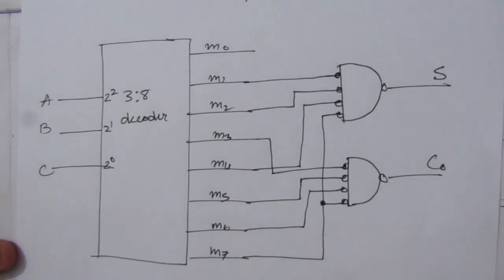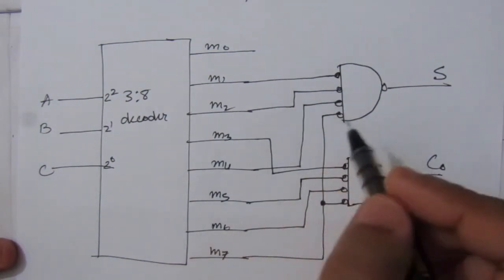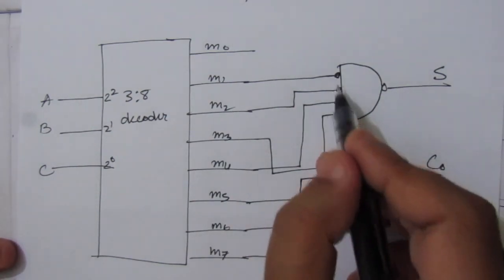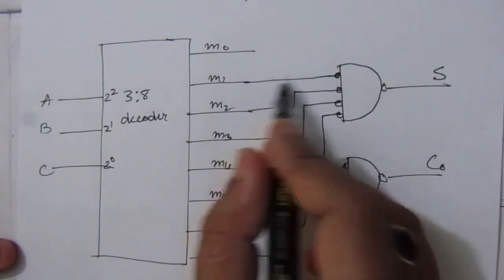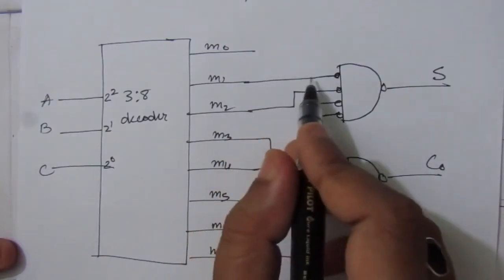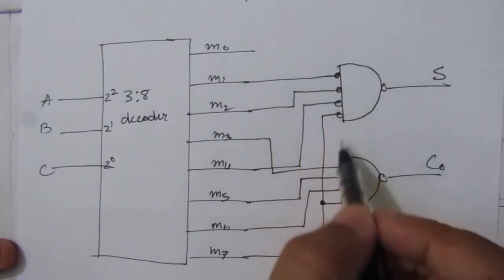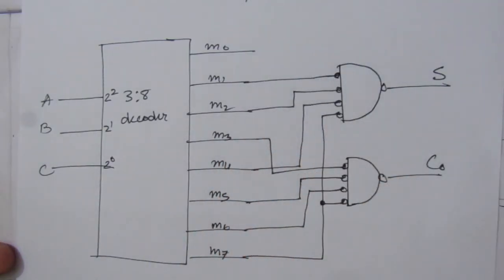This is the complete circuit diagram of a full adder using a decoder and NAND gates. Keep in mind that I have used bubbles, but you can replace them with a standard inverted-input NAND gate. Thank you for watching — if you have any questions, please put them in the comment section below, and like, share, and subscribe to my channel.